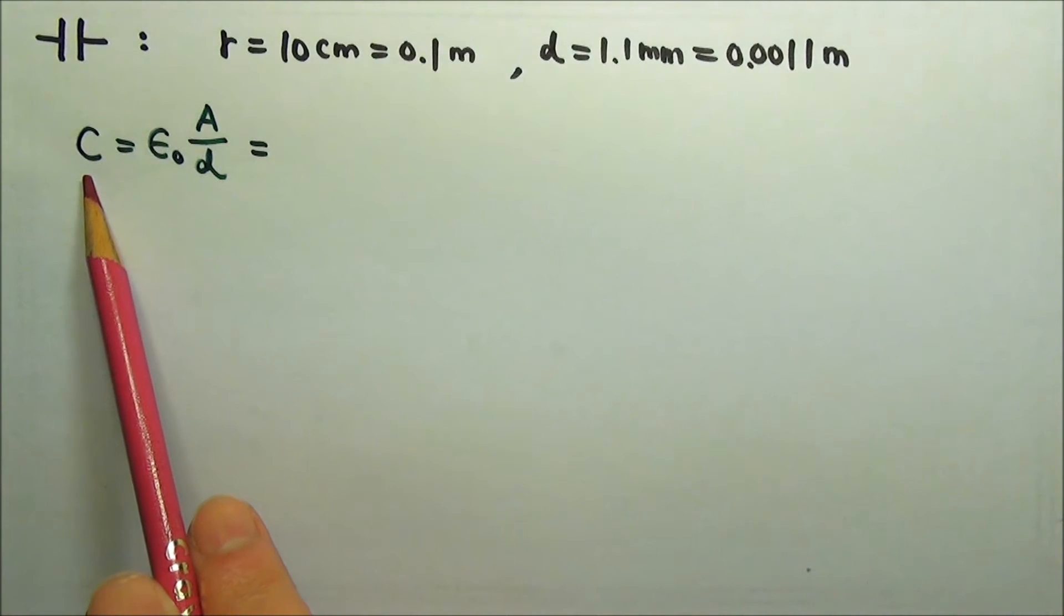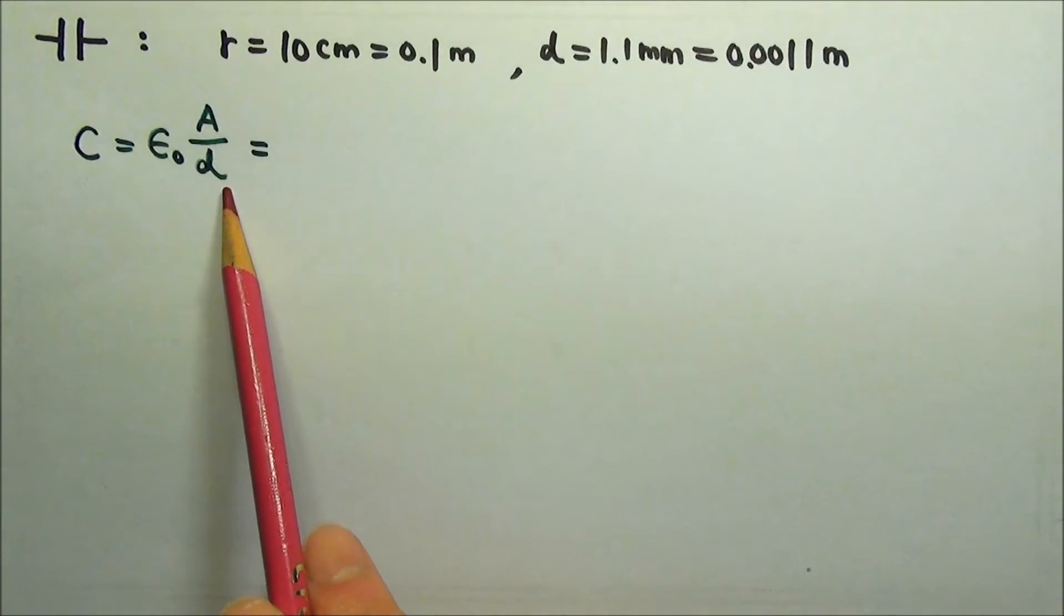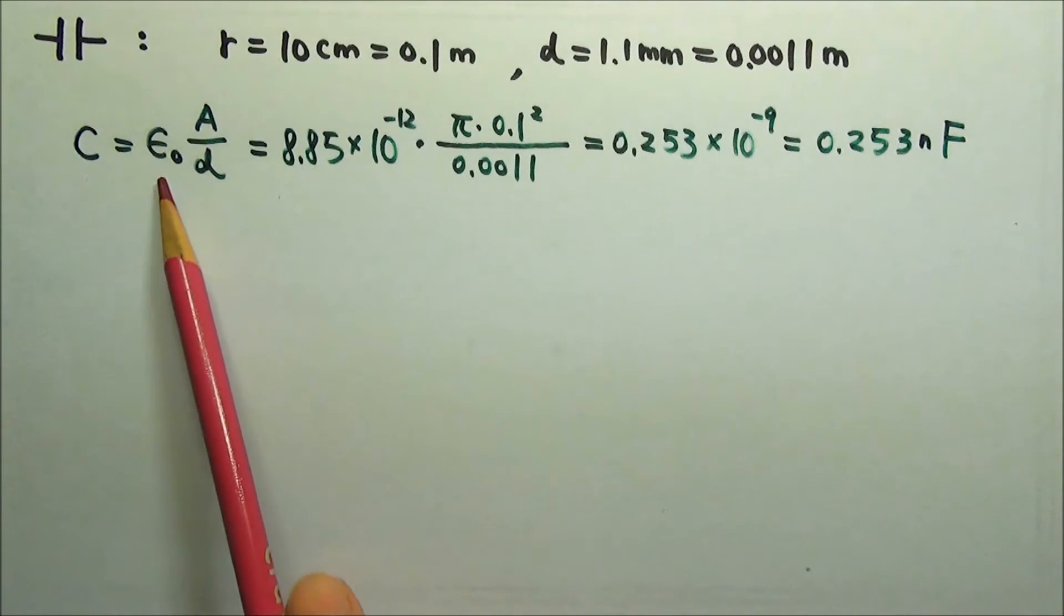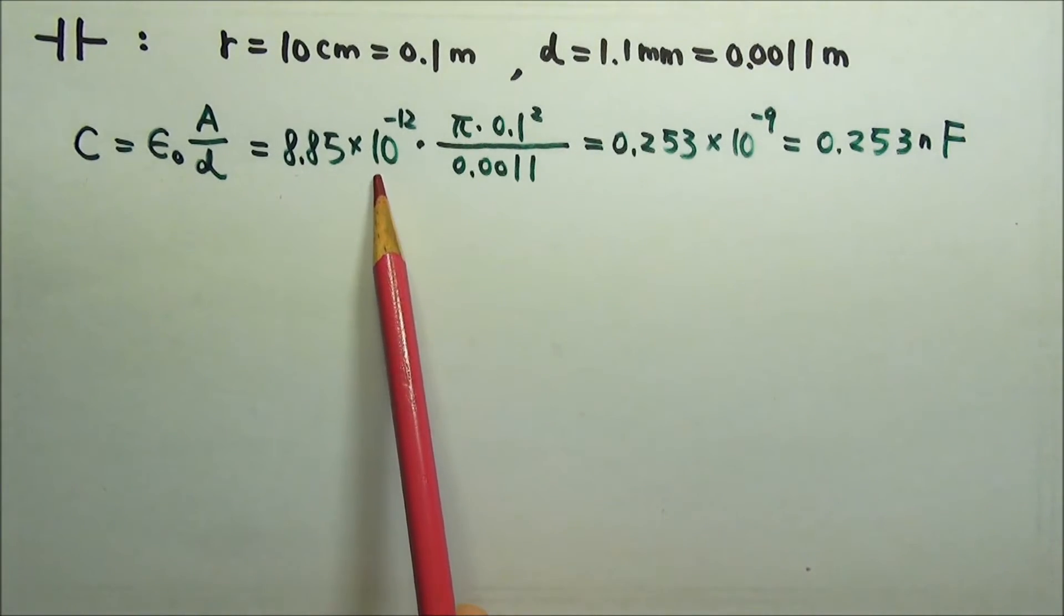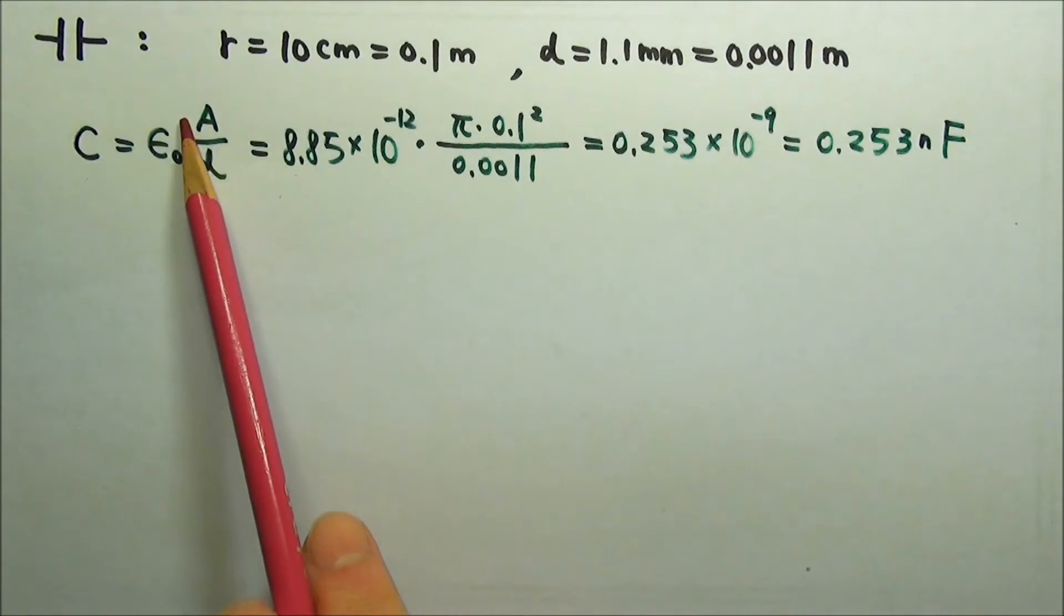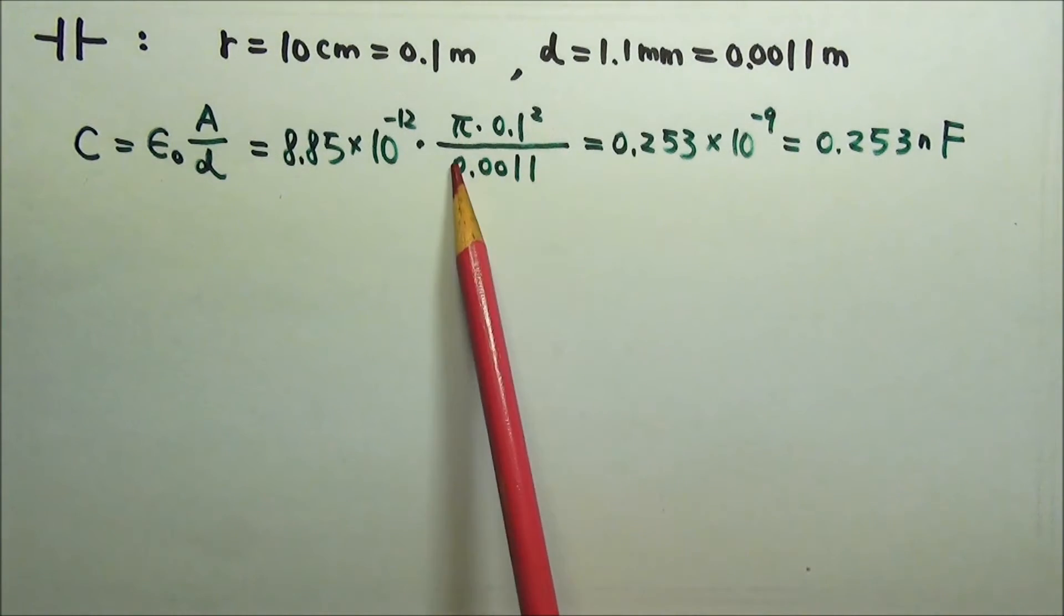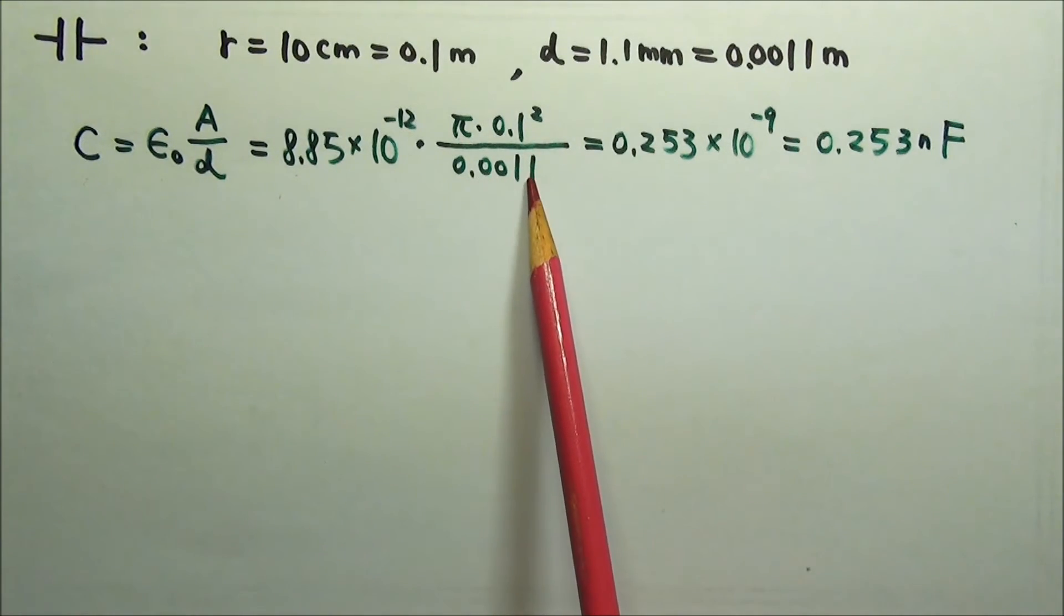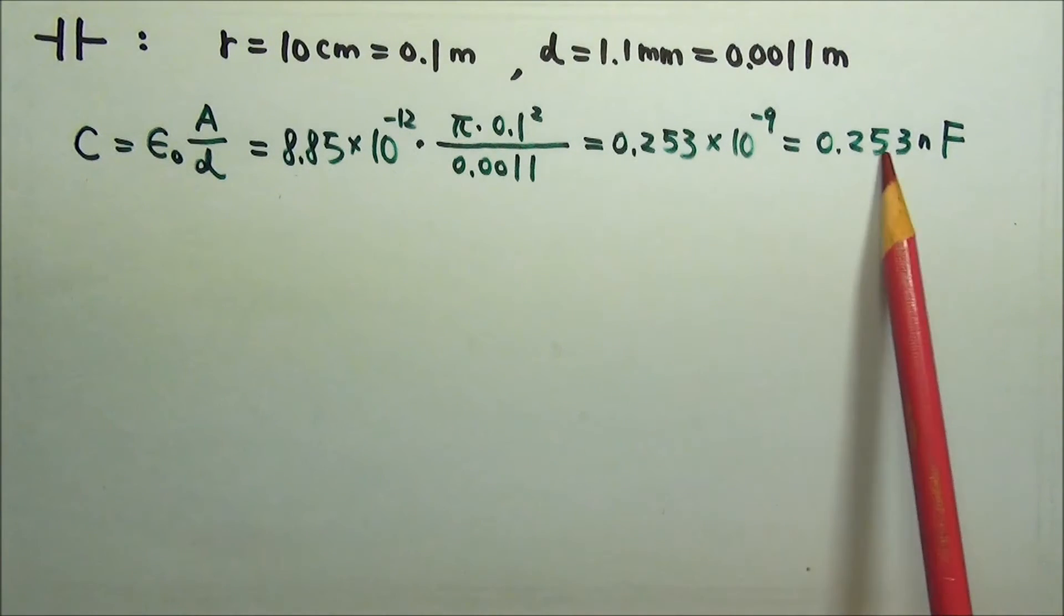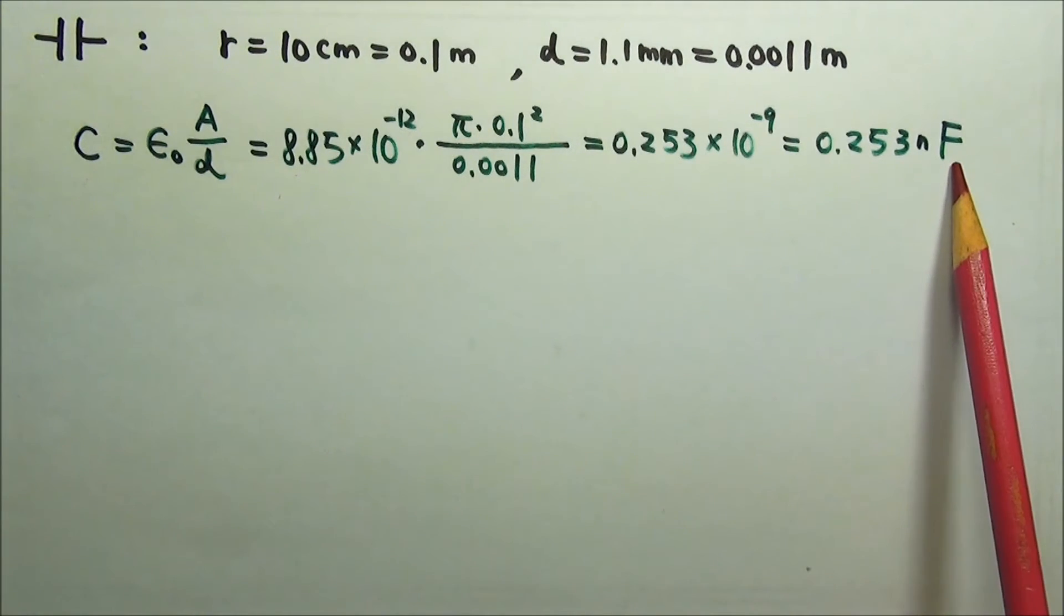We can use C equals epsilon naught A over D to calculate the capacitance. Epsilon naught is 8.85 times 10 to the negative 12th. The plate area is pi R squared, and plate separation is 0.0011, so we get 0.253 nanofarad.